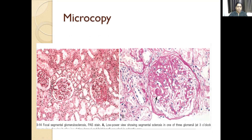In the morphology, we have three glomeruli here — one, two, and three. The third one is different from the other two. Here we can see this is the sclerosis. This is a part of the glomeruli which is affected — that is the segmental type.